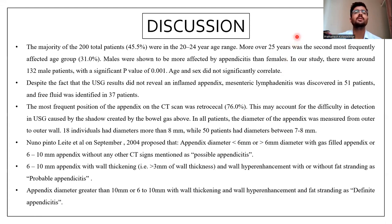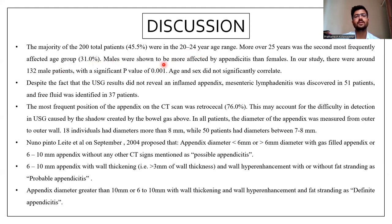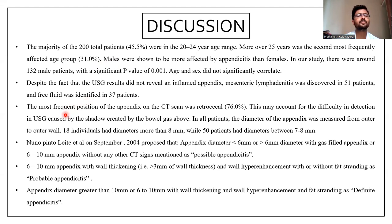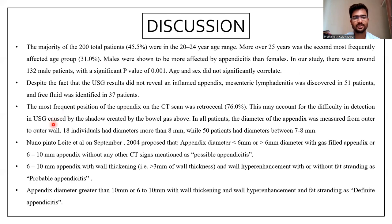In the discussion, the majority of 200 total patients, that is 45.5%, were in the age group of 20 to 24 years, and males showed more incidence than females, with 132 males for 200 cases showing higher incidence. Age and sex did not significantly correlate. Despite USG not revealing an inflamed appendix, mesenteric lymphadenitis was discovered in 51 patients and free fluid was seen in 37 patients on ultrasonography. The most frequent position of appendix on CT was retrocecal at 76% in our study. This may account for the difficult detection of the appendix on USG, caused by the shadow created by gas bubbles above.